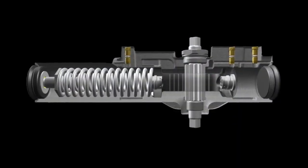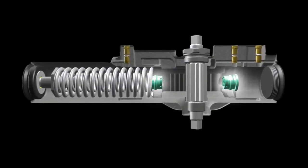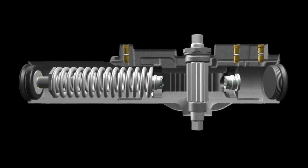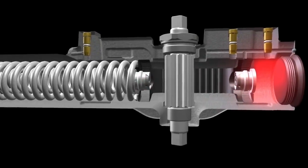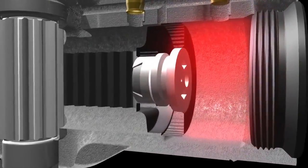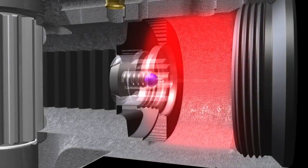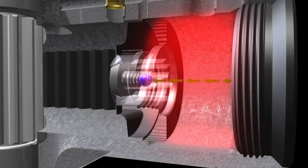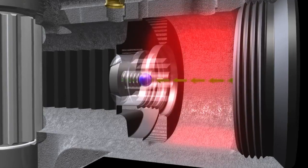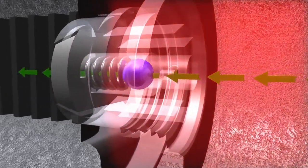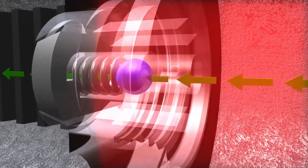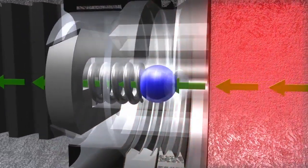This is why our unique self-regulating pressure relief valves are so important. Under abusive conditions, the pressure relief valve on the end of the piston senses the extreme pressure and automatically meters the fluid to achieve more normal pressure levels.